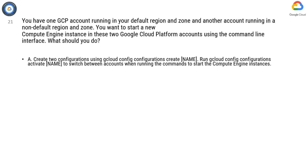Option A. Create two configurations using gcloud config configurations create name. Run gcloud config configurations activate name to switch between accounts when running the commands to start the Compute Engine instances.